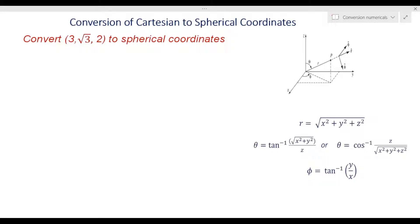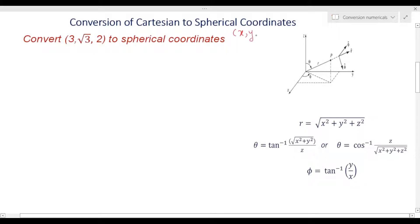In this video we are going to talk about another problem on spherical coordinates, but this time it is a conversion problem from Cartesian system to spherical coordinates — meaning you have to go from x, y, z to r, theta, phi. The definition and meaning of r, theta, and phi have already been discussed in previous videos, and the link will be provided in the description box. In the previous video on spherical coordinates, we learned how we obtained these transformation equations.